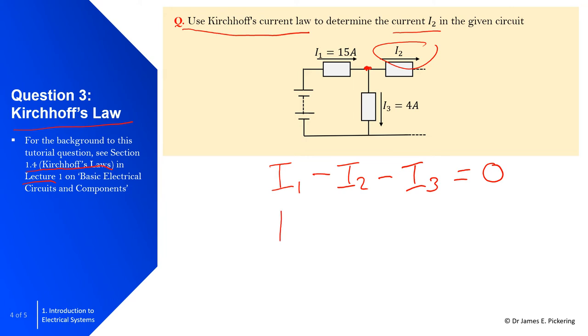If we just rearrange that, because we want to determine what I2 is, I2 is going to be equal to I1 take away I3. In this case, I1 is 15 take away 4, so effectively the answer is 11 amps. I2 is equal to 11 amps.